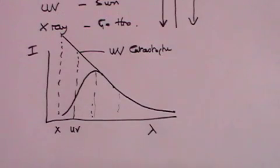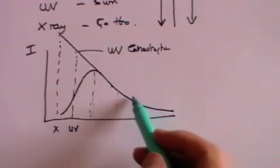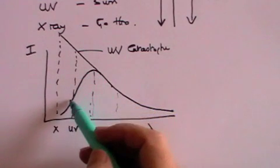But why doesn't it? Why does the curve go up as we expect, but then start coming down again?